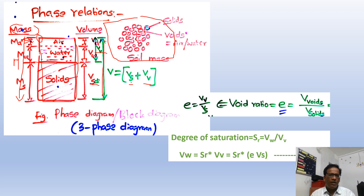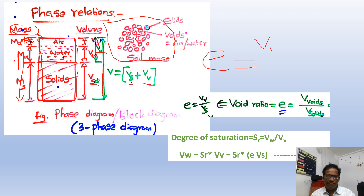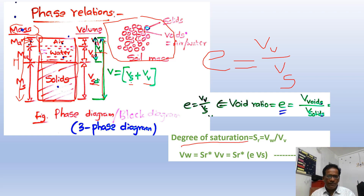Now let us pick up the void ratio first. Void ratio is a volumetric relationship — it is the ratio of volume of voids to volume of solids, which I can write as Vv divided by Vs.